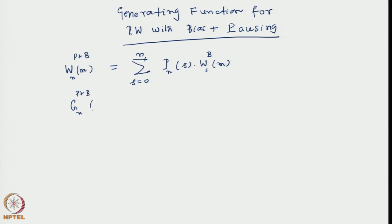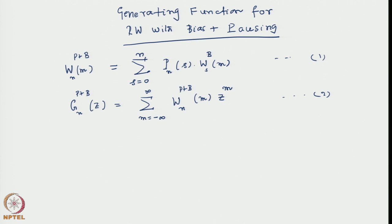So, pausing is encoded in p and the bias occupancy is in w. From this we proceeded further, explicitly using the formula for both p and w, and arrived at a solution. For the generating function, we start with this and define the generating function g of the nth step for the case of p plus bias, as a function of the parameter z, as the sum over sites m from minus infinity to infinity.